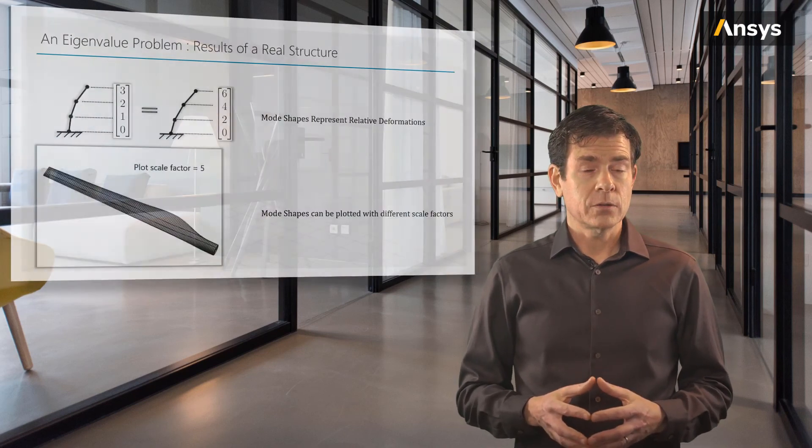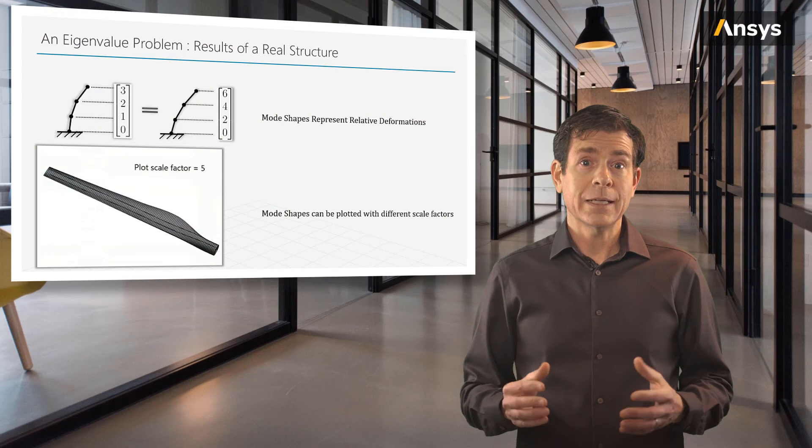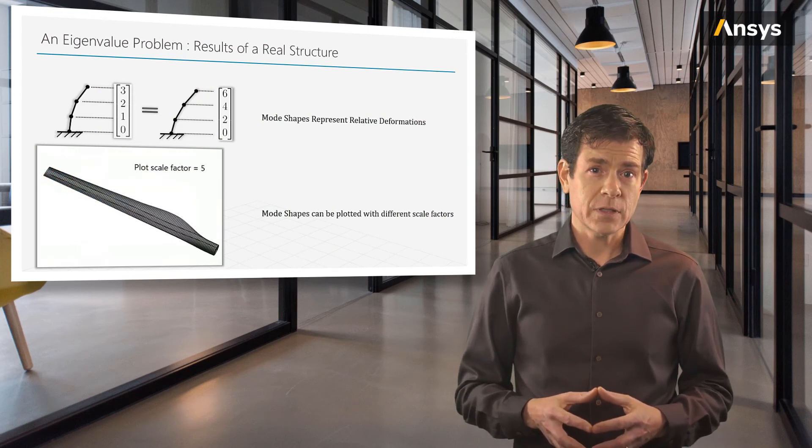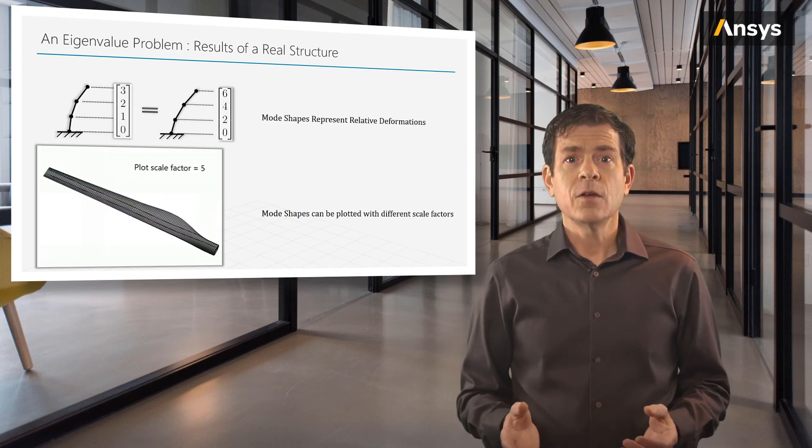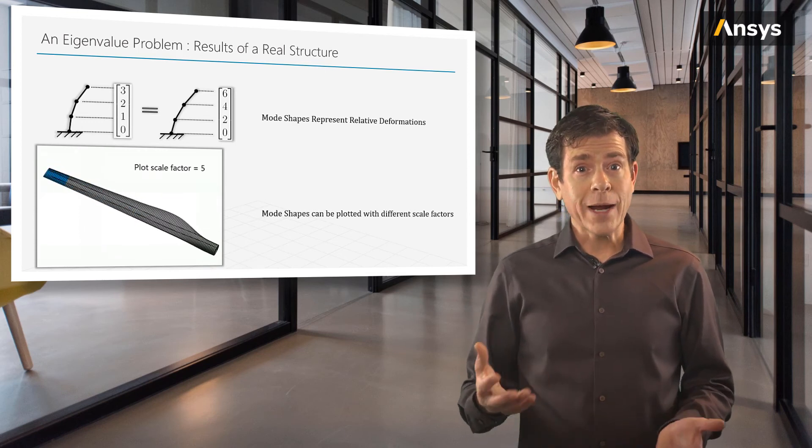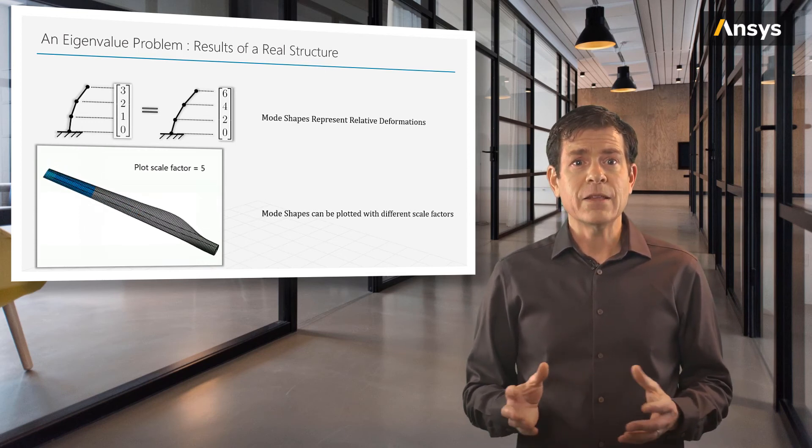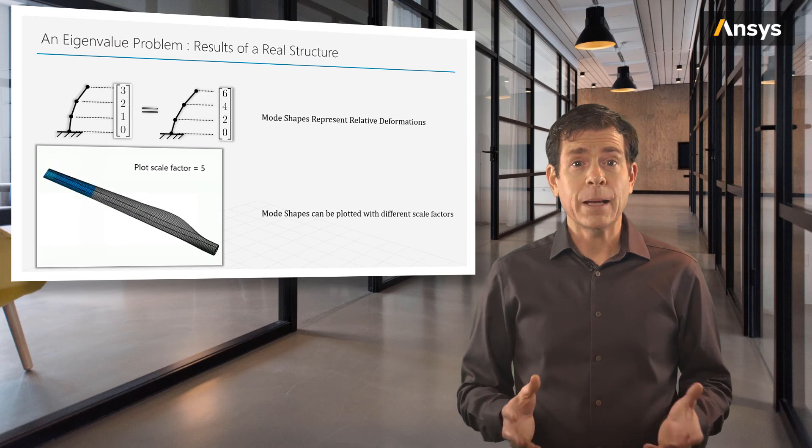Mode shapes represent the relative deformation of the structure, not the absolute value. Again, mode shapes are eigenvectors of the system, which are essentially vectors. Vector's representation, directions in the coordinate system, and the value of the components are not absolute.